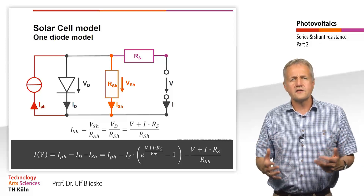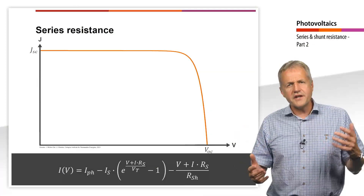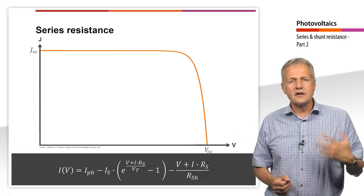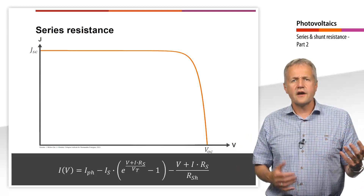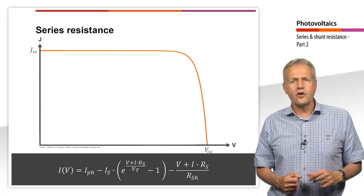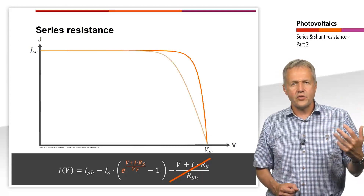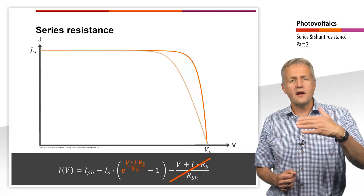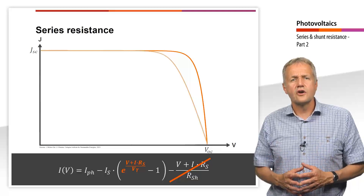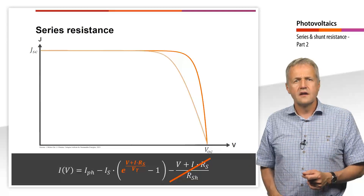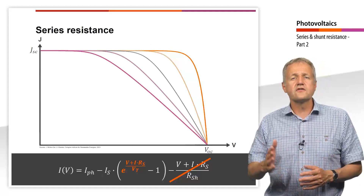This model of a solar cell is called the single diode model. For most purposes, the single diode model is sufficiently accurate. With the equation resulting from the single diode model, we can now look at the influence of the series and shunt resistance on the JV curve of a solar cell. We first consider a solar cell without shunt resistance, so the last term in the equation is deleted. If we increase the series resistance, the exponential function reaches high values even at lower voltages, so the current through the diode becomes larger. This leads to an earlier bending of the JV characteristic. If we increase the series resistance further, we can observe that the JV curve becomes flatter and the knee of the curve shifts to lower voltages.